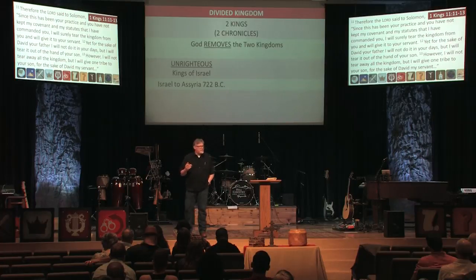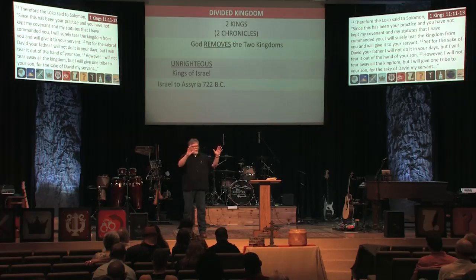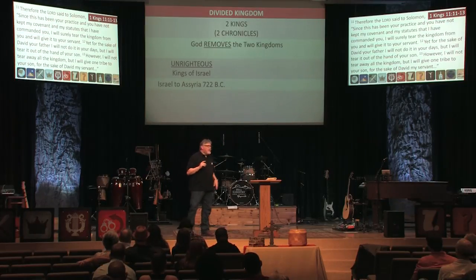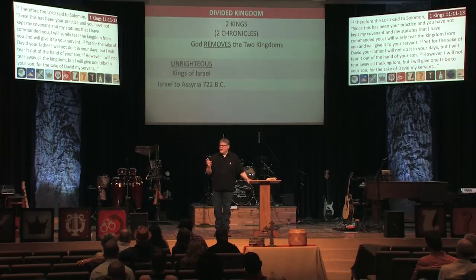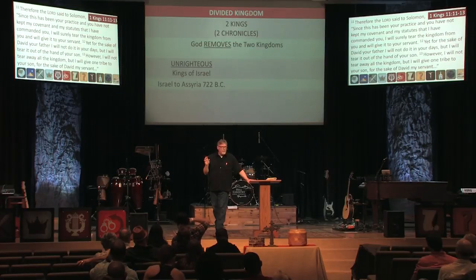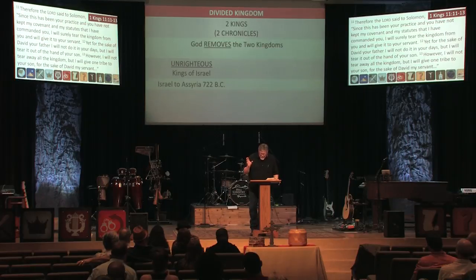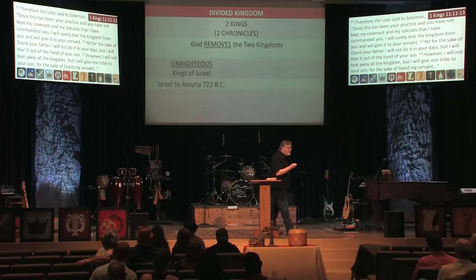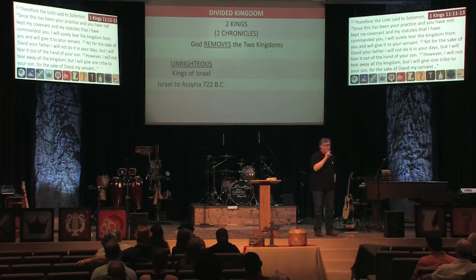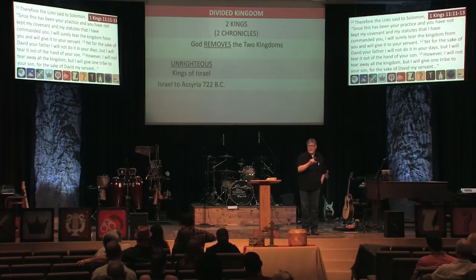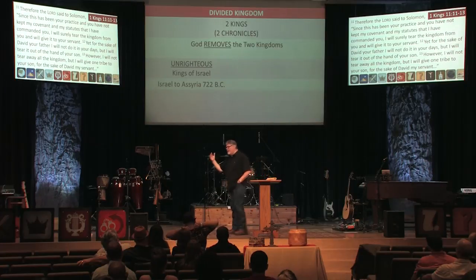A young man named Shalmaneser — general for the king — comes in, wipes them out, and carries the people off into captivity. Judah lasts a little bit longer. They have 20 kings and eight of them are good, so twelve kings are bad. Eight kings are described as they walked in the steps of David — meaning good — and others did not walk in the steps of David and were bad.